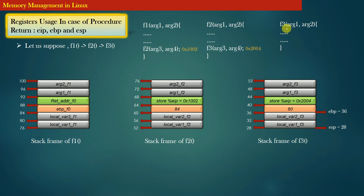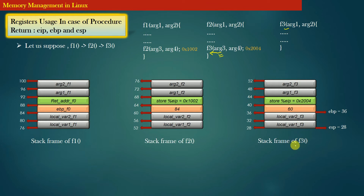When function f3 returns, function f2 will resume its execution from the instruction where it left off — specifically, the very next instruction following the call to function f3. There may or may not be any further instructions in f2 after that, but what matters is: how the stack memory occupied by f3 is freed, and how f2 restores its state so it can resume execution.